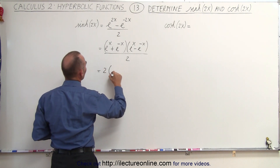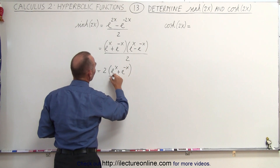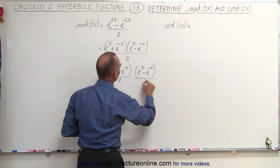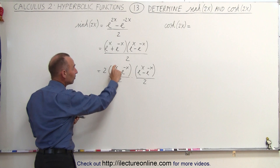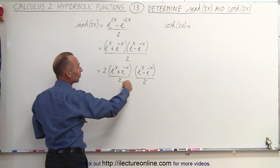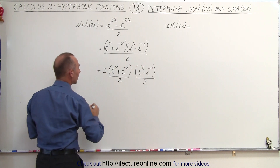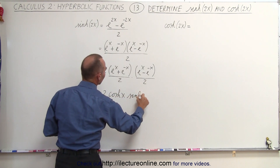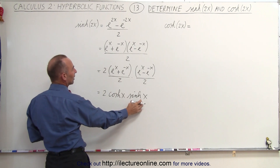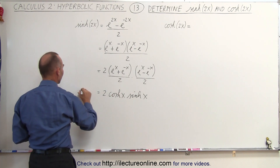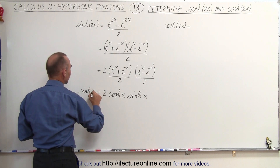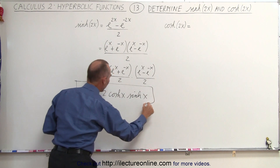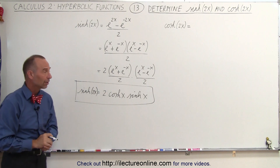This is equal to 2 times e to the x plus e to the minus x divided by 2, times e to the x minus e to the minus x divided by 2. We recognize the first factor as the hyperbolic cosine and the second as the hyperbolic sine. So this becomes 2 times the hyperbolic cosine of x times the hyperbolic sine of x. Therefore, the hyperbolic sine of 2x is equal to 2 times the hyperbolic cosine of x times the hyperbolic sine of x.